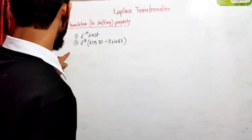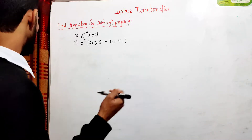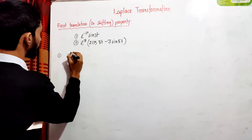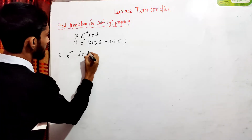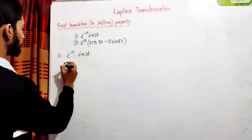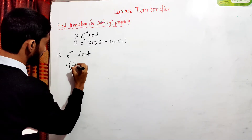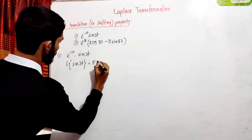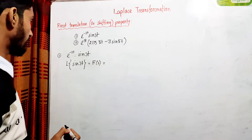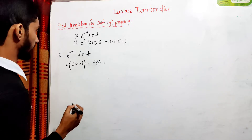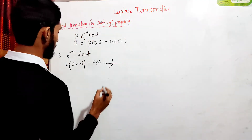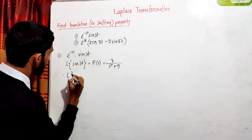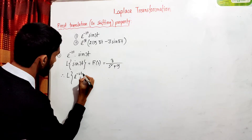Let's look at an example. Find the Laplace transform of e^(minus 2t)·sin(3t). We need to remember that the Laplace transform of sin(3t) is 3 divided by (s squared plus 9). This is our F(s) function.